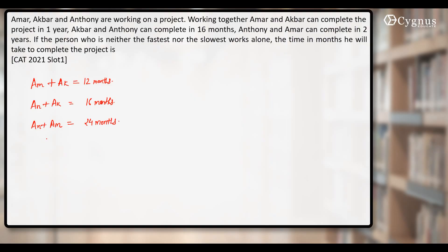Now what's the project here? That's not given. Let's take the LCM of these 3 values, it comes out to be 48. So let's assume that total work is 48 units.